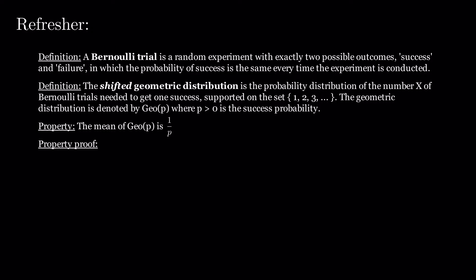The mean of the geometric distribution is 1 over P. Now, let's prove this. The probability of X equals K is 1 minus P to the power of K minus 1 times P for any K positive integer. This is due to the fact that we need exactly K minus 1 failures, which occur with probability 1 minus P, followed by one success, which occurs with probability P.